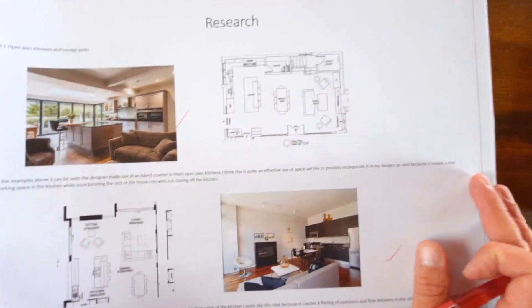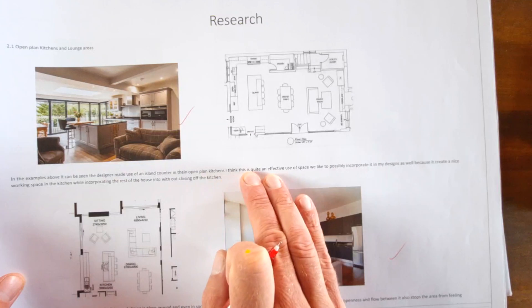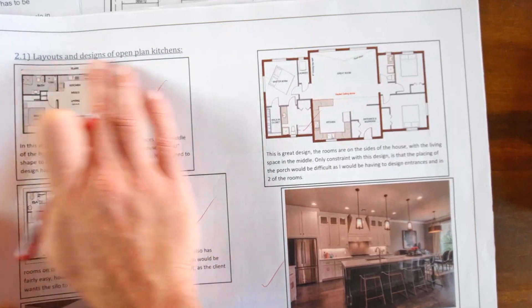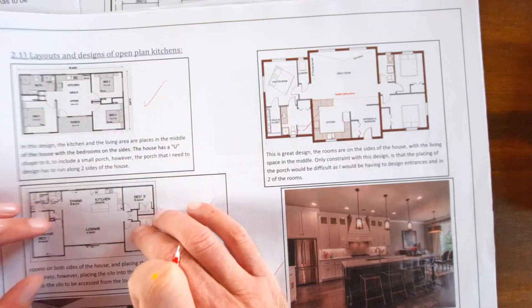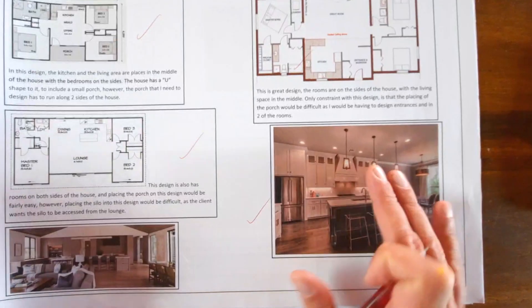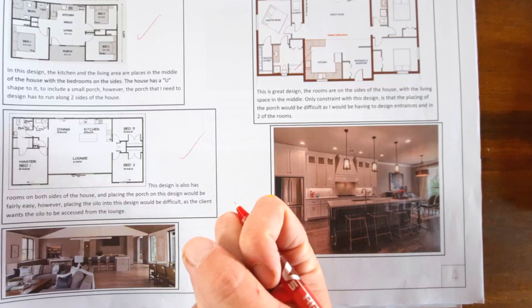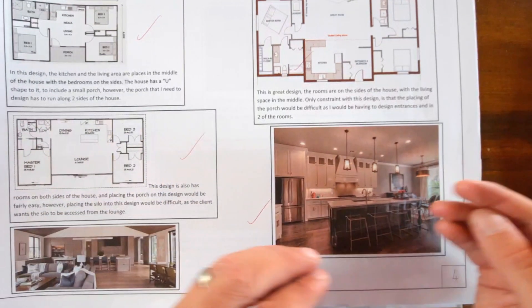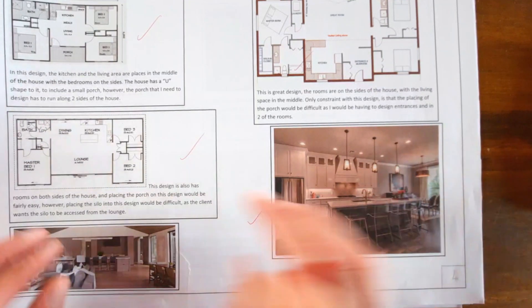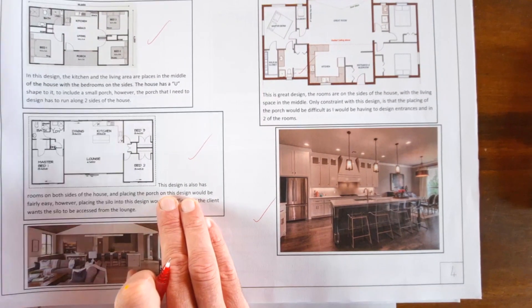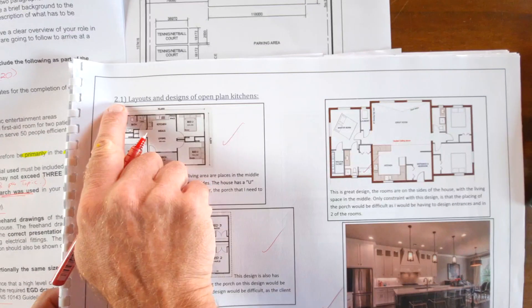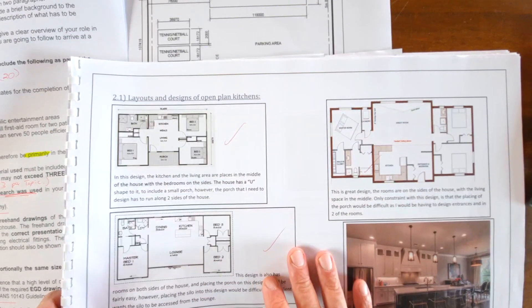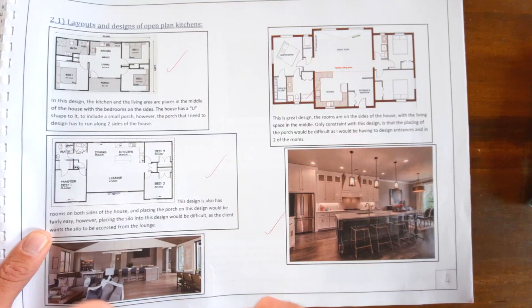Here's another example of research laid out with illustrations and a one-sentence discussion of what stood out. This example was layout and designs of open-plan kitchens — you can see the learner looked at real examples, included pictures, and noted what they will implement in future designs. That's the evidence they refer to: a summary of what content you're going to use. Make sure you number it correctly and have a nice border around it. Now it's your turn.